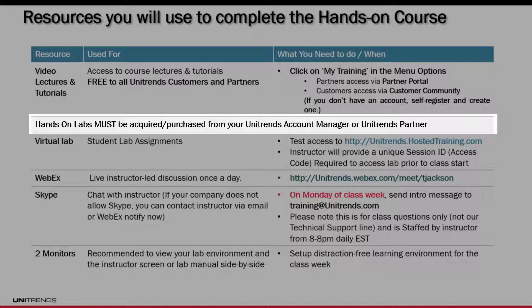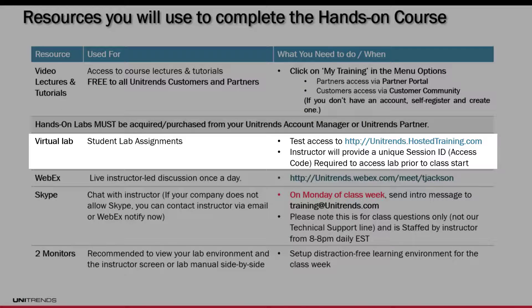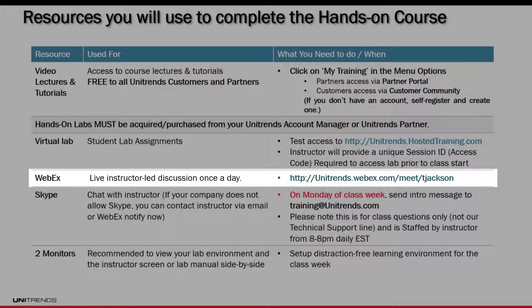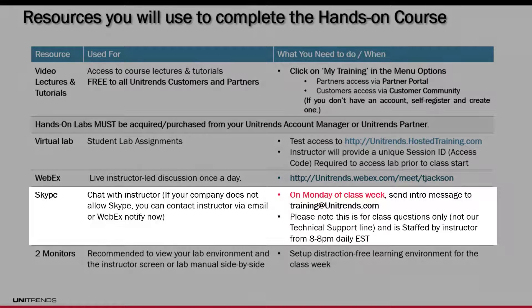The hands-on labs must be acquired or purchased from an account manager or Unitrends partner. You'll receive a virtual lab access code — make sure you test it as shown in the accessing your lab tutorial. Also confirm you can reach the lab URL and unitrends.webex.com/meet/tjackson, which is the WebEx virtual classroom used for instruction.